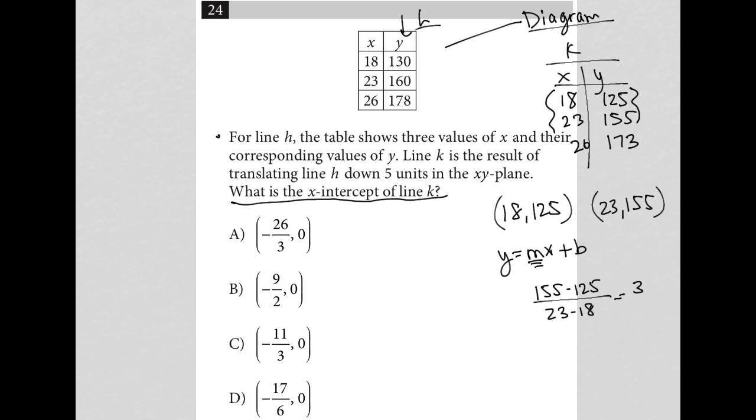And what I get here is 30 over 5, which is 6. So I know that M is equal to 6.